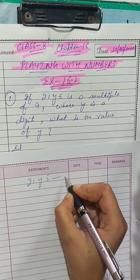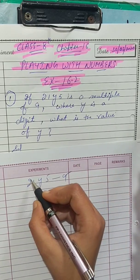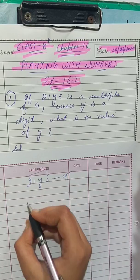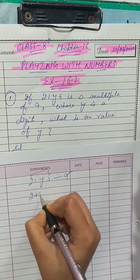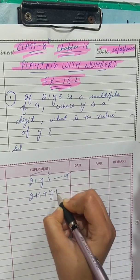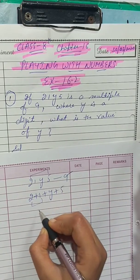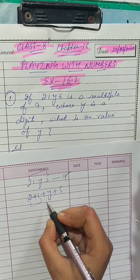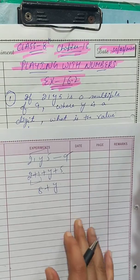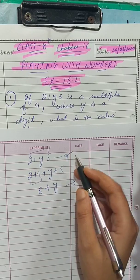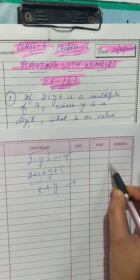To check divisibility by 9, the sum of all digits must be checked. So check: 2 + 1 + y + 5. Now 2 + 1 = 3, and 3 + 5 = 8, so we get 8 + y.